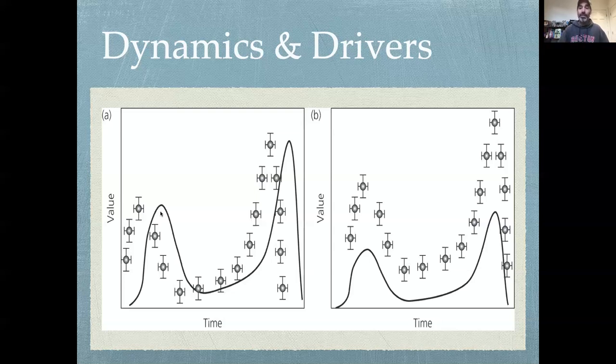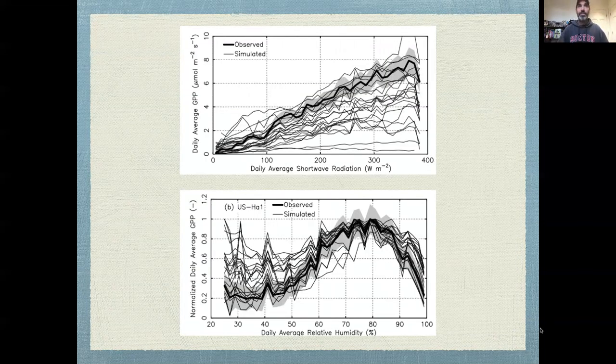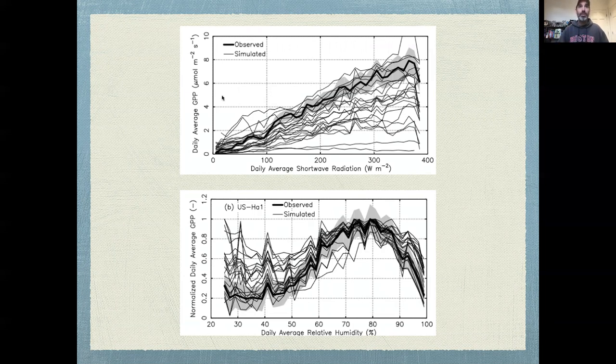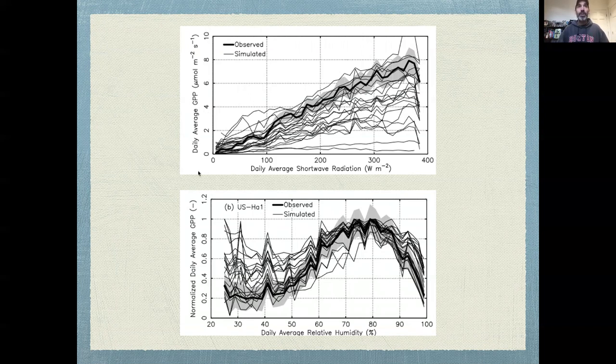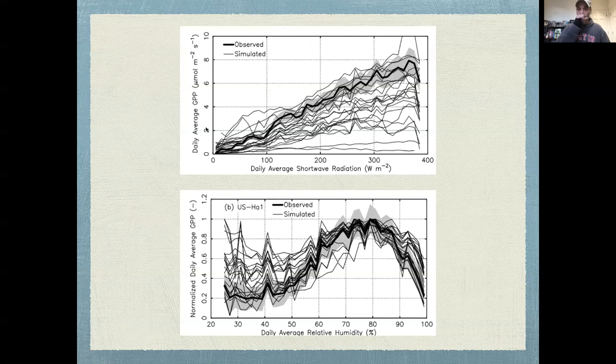Another thing that can be really useful when assessing models with more than one variable is to plot the output versus the inputs or drivers or covariates. Here's an example using land models - predictions of gross primary productivity, the photosynthetic rate of a whole ecosystem measured from flux towers. The observed data and its uncertainty is in this solid black line with an error bar, and here are predictions from a whole bunch of mechanistic models.